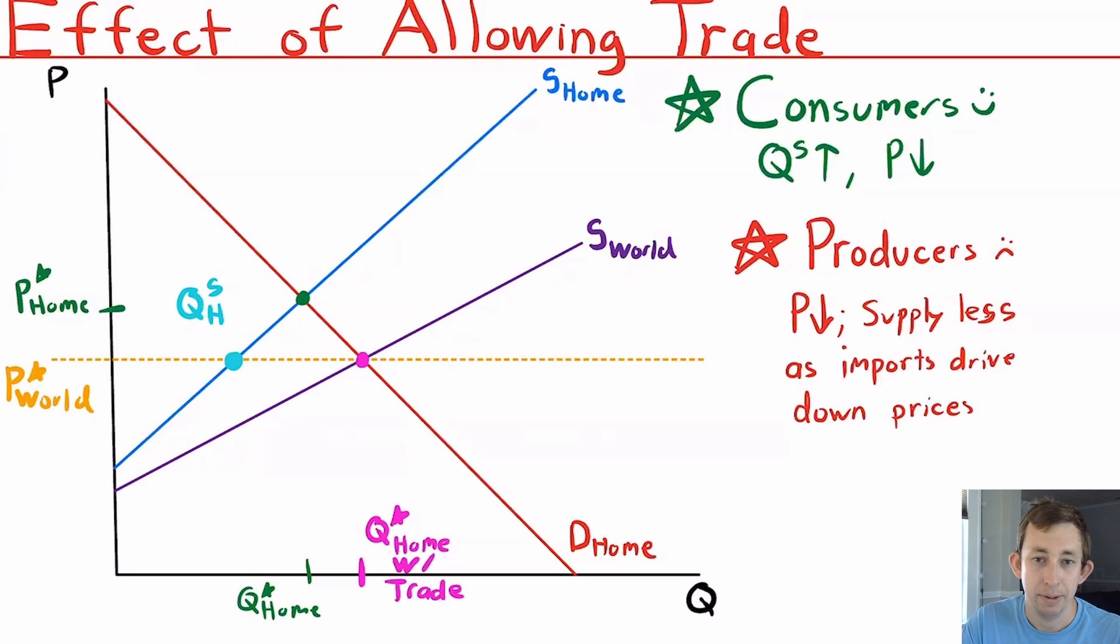For the opposite, if we were exporting, this quantity supplied by our hometown donuts would be to the right or above the quantity that prevailed in our hometown market, or the quantity demanded by our hometown market at this p star.